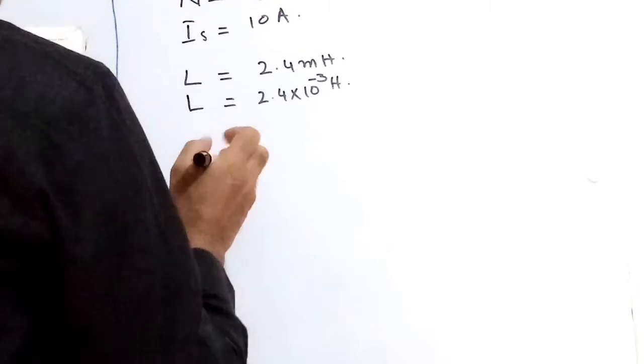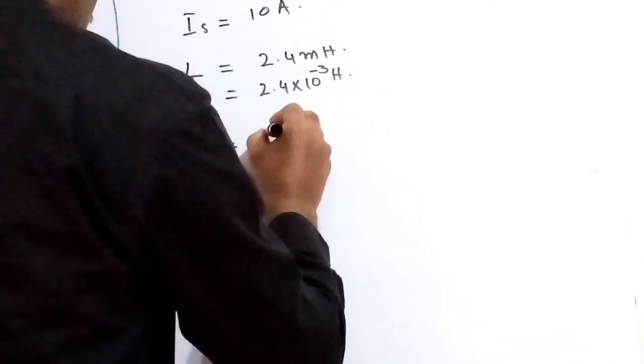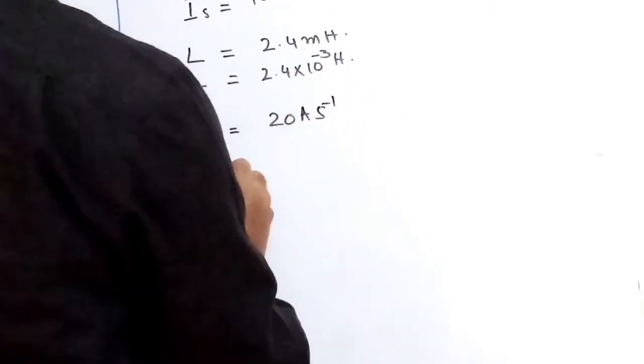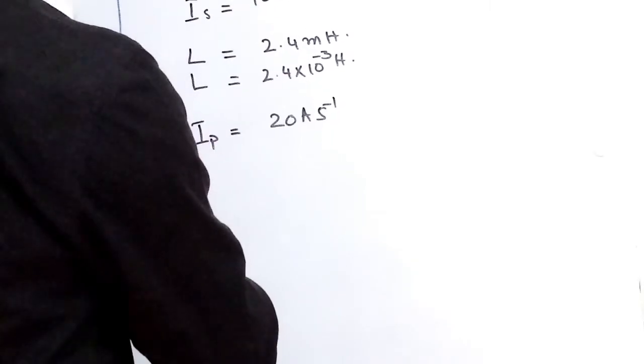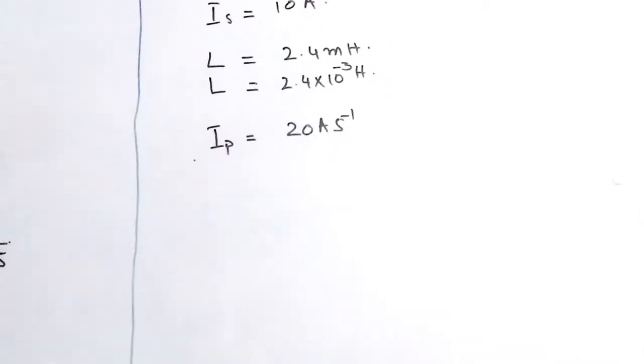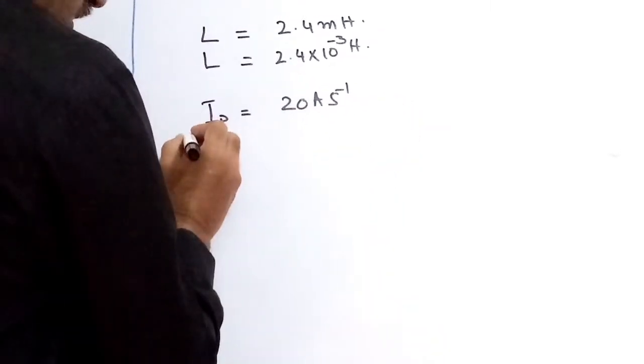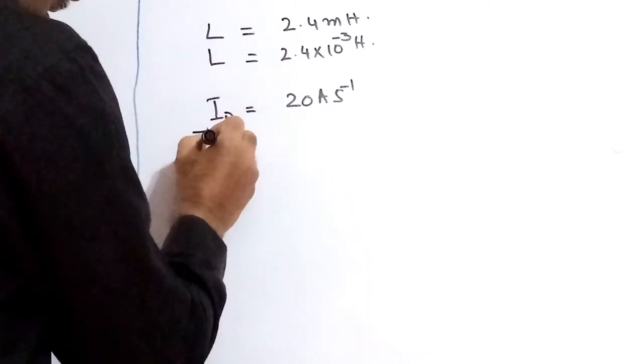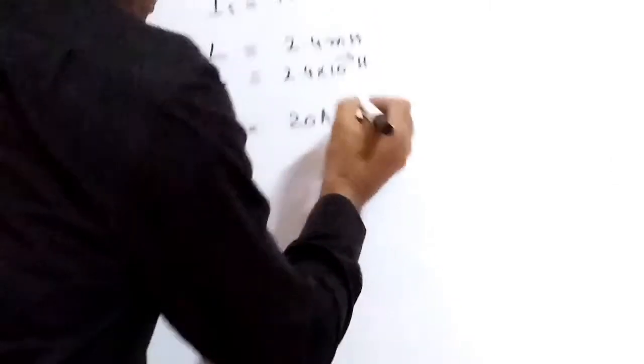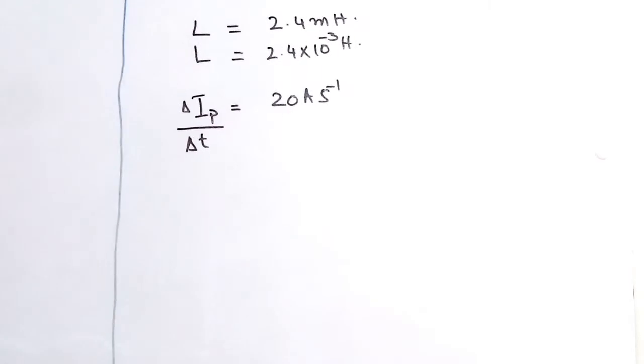And the change in current, dI/dt, is equal to 20 Ampere per second. We write here: change in current over change in time equals 20 Ampere per second, change in current with reference to time.